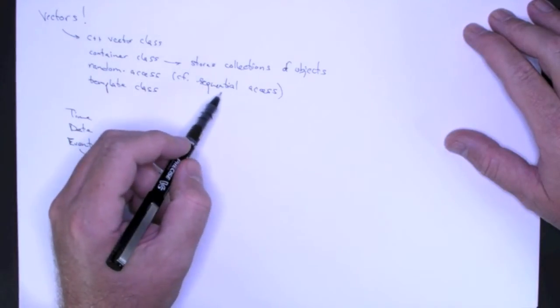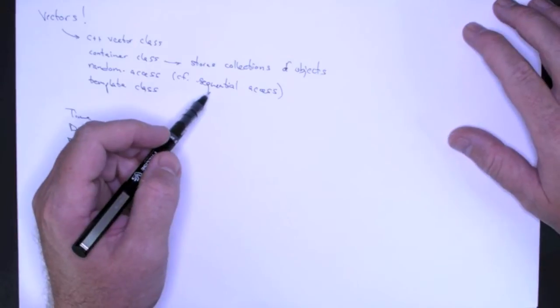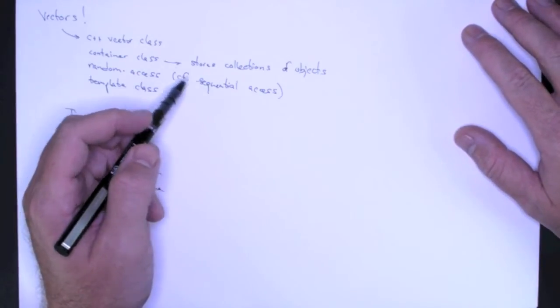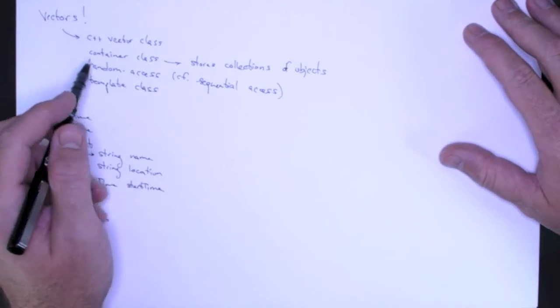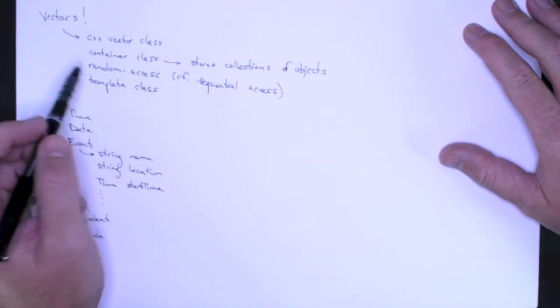And in order to access the second element of the container, you have to first access the first one. And this will become a little more clear after you have some experience.